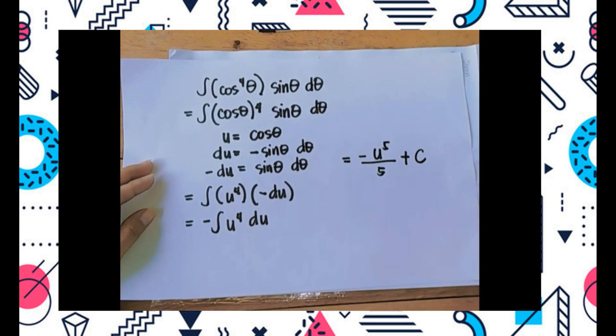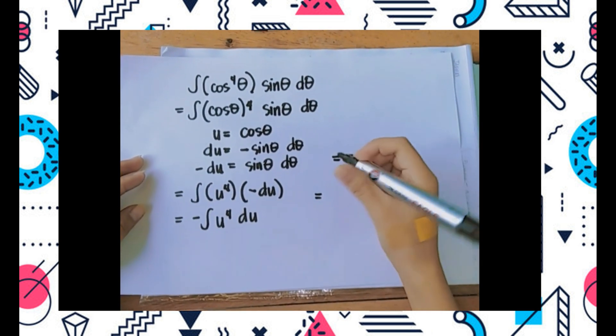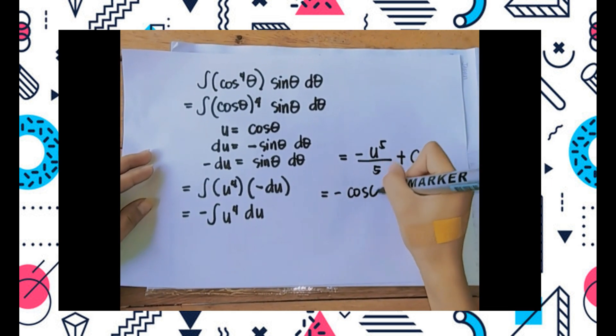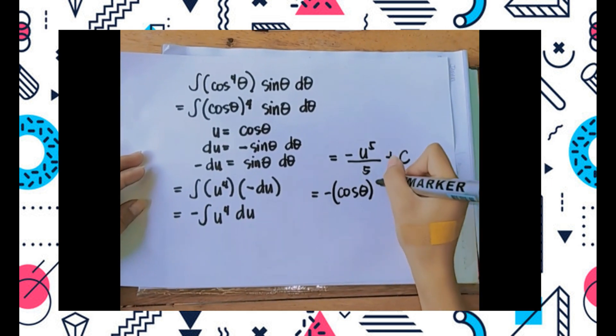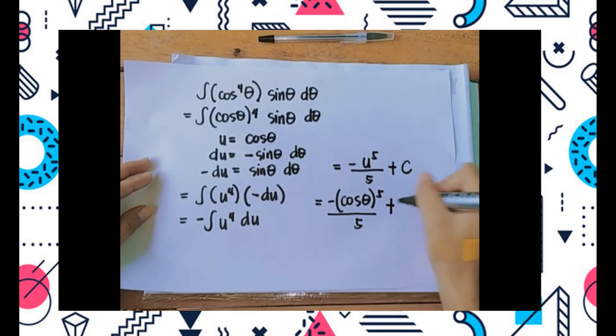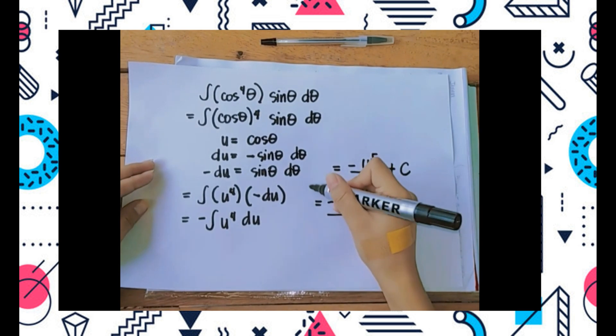u was cosine of theta raised to the fifth power divided by five plus c, and that will be your antiderivative for this problem.